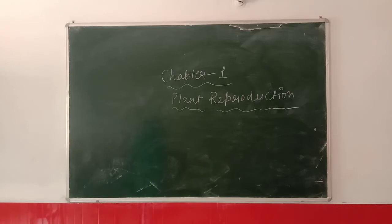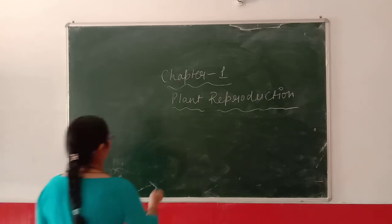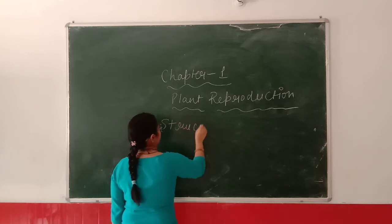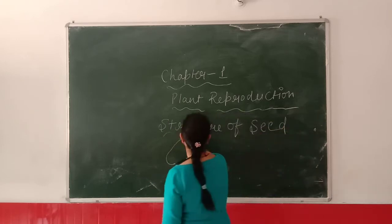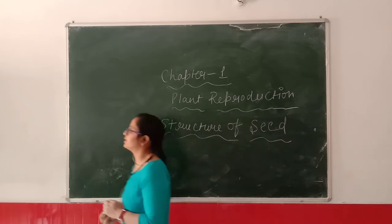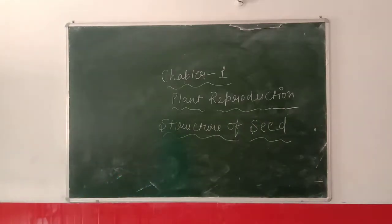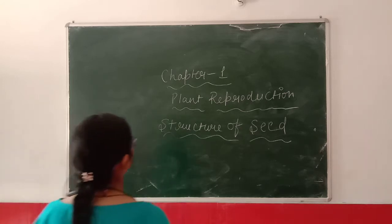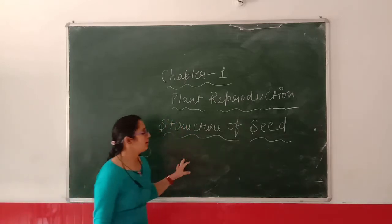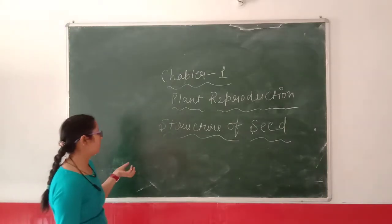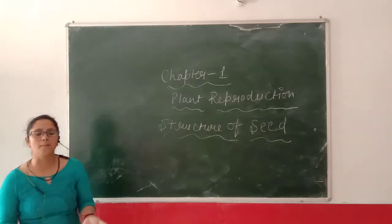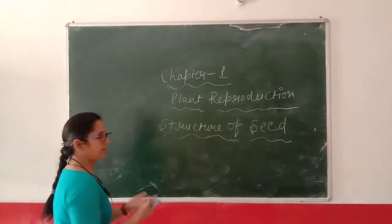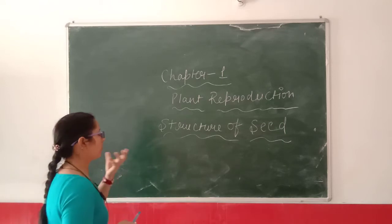Now we will learn about the structure of a seed. You can see seeds at your home — so many seeds are there, like pulses and grains. We have also seen the seeds of fruits. Rajma beans are a very good example of a seed that you can see at home, and it is a good example because it is a little big in size, so you can recognize it very well.